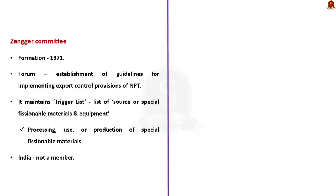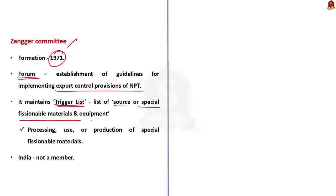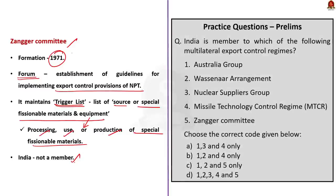The Zanger Committee was formed in 1971 as a forum to establish guidelines for implementing the export control provisions of the Non-Proliferation Treaty, among nuclear supplier members of NPT. The Zanger Committee maintains a list of controlled nuclear-related items called the trigger list — a list of source or special fissionable materials and equipment designed for processing, use, or production of special fissionable materials. India is not a member of the Zanger Committee.